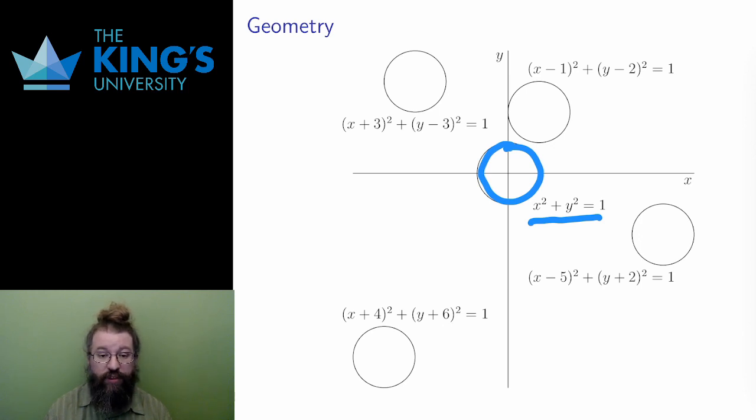If I replace x by x plus 3, and y by y minus 3, then to balance, I move three units in the negative x direction, left, and three units in the positive y direction, up.